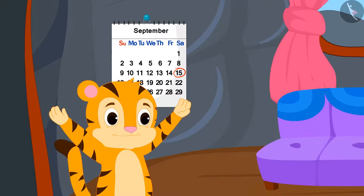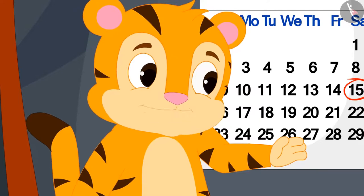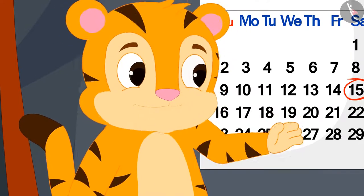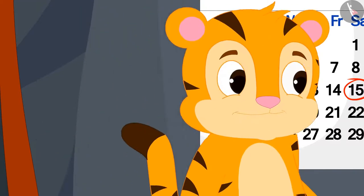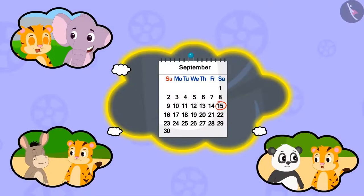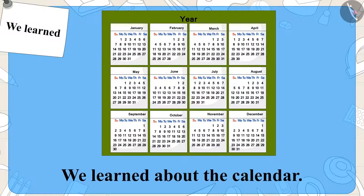Sher Khan was very happy after learning about the calendar. He told his mother that now he himself will find the right day for the magic game. He went running and told his friends about the calendar. Children, in this video we learned about the calendar. In the next video, we will learn more about it with some interesting examples.